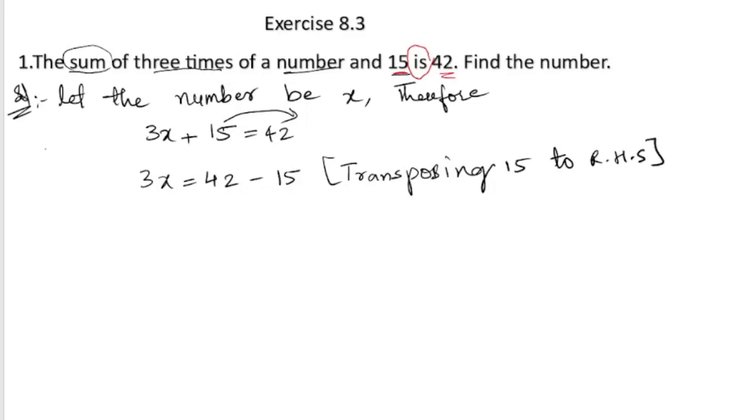Next, now let us subtract this. 3x equals to... 12 minus 5 is 7, and 3 minus 1 is 2, so it is 27.